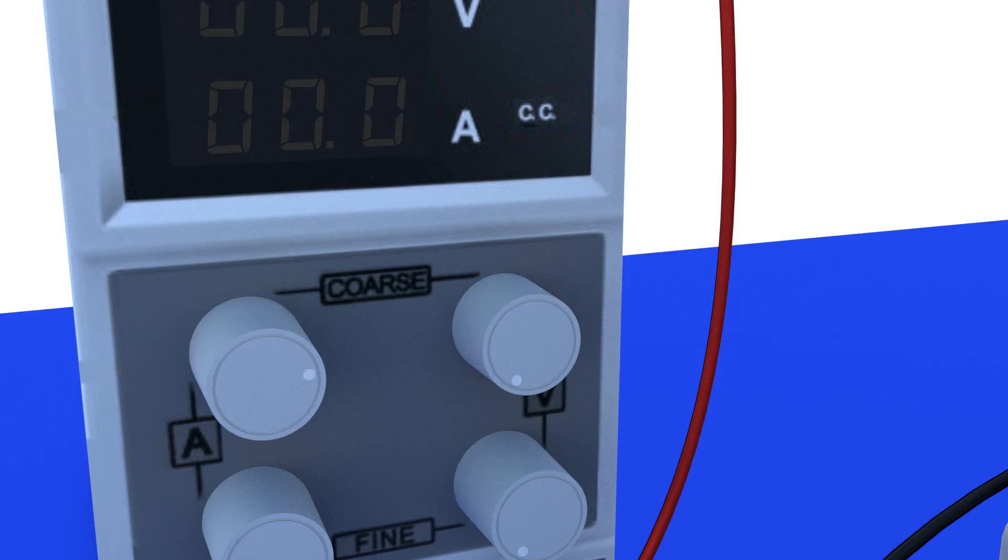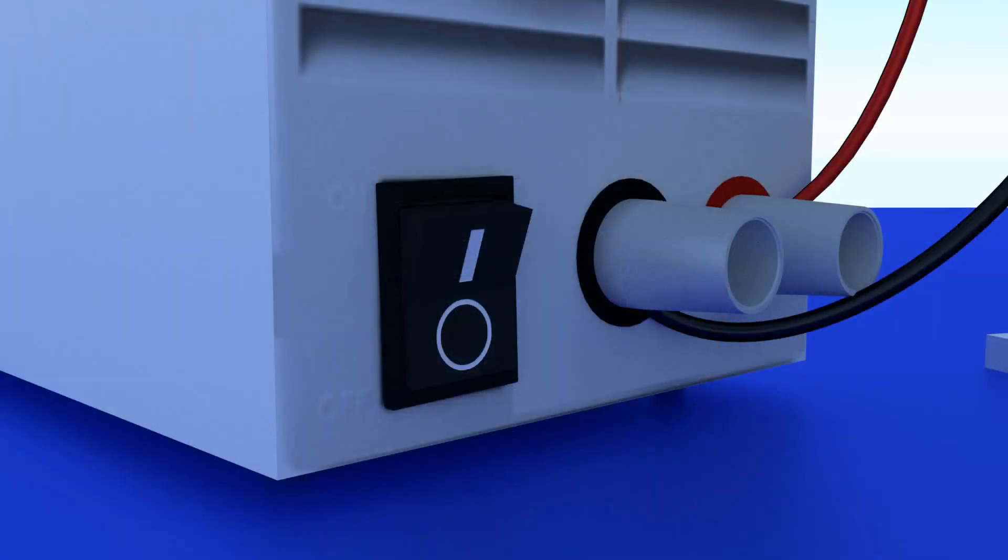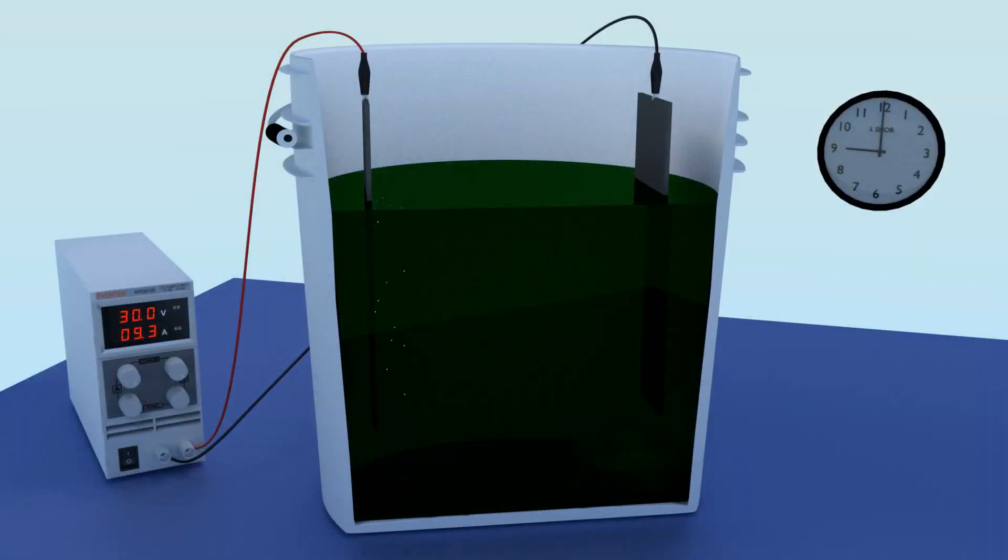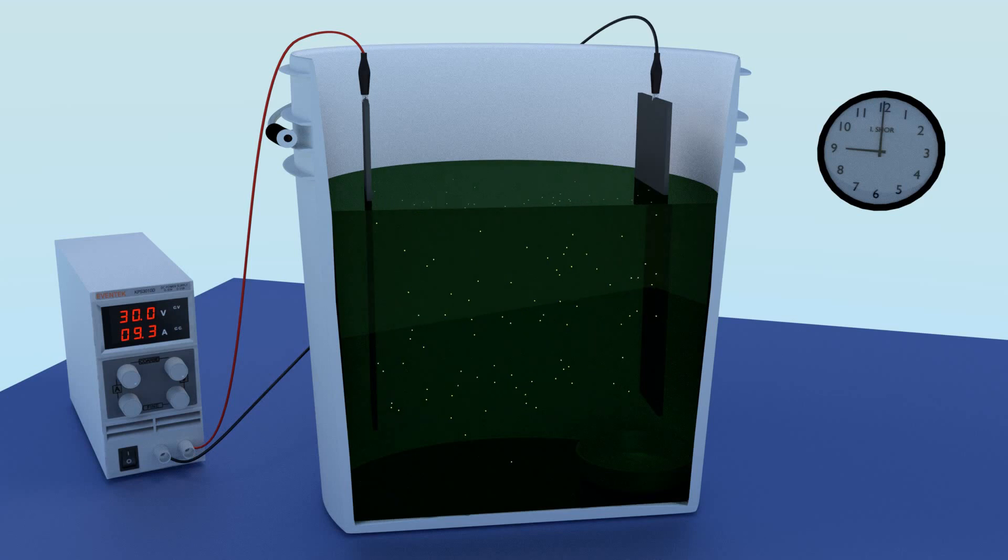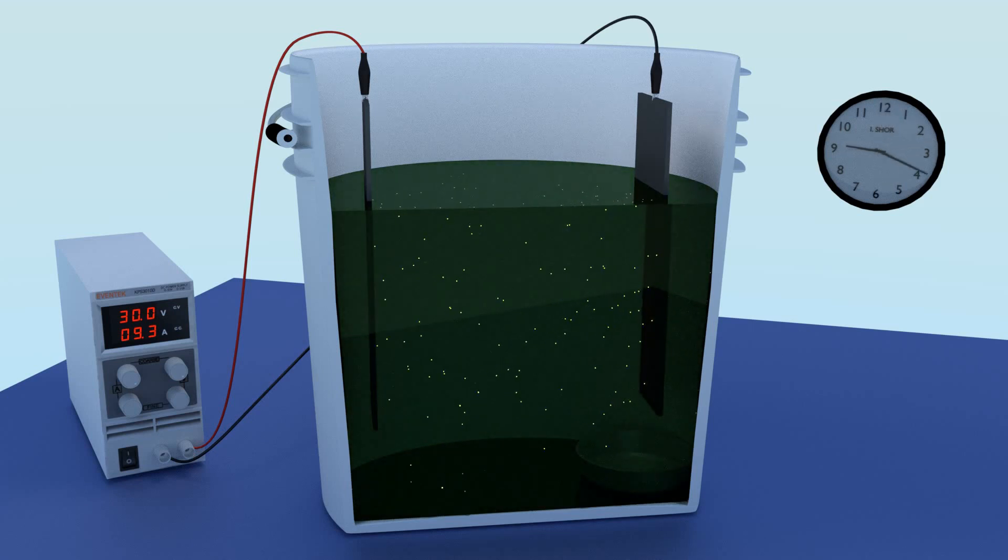The process is very simple. Turn both your volts and amps all the way up. Then switch on your rectifier. The metal will plate out of solution and adhere to the cathode. This may take some time to complete.